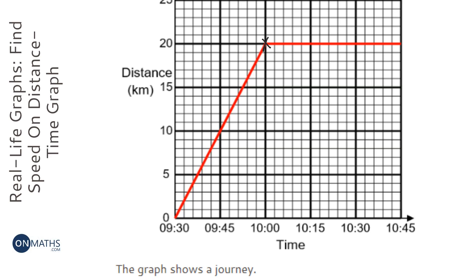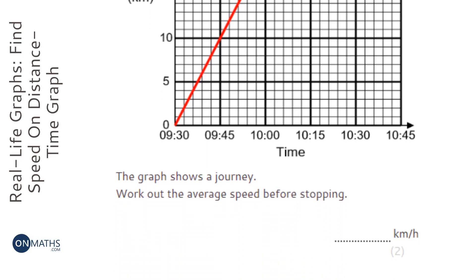So we're looking for the speed up until that point. And we use our little speed-distance-time triangle, so speed equals distance over time. And so we're looking for average speed, so it's total distance over total time for the duration we're looking at. So speed equals distance over time.